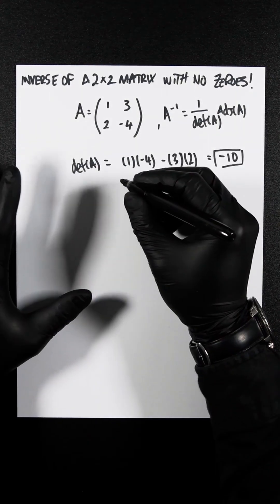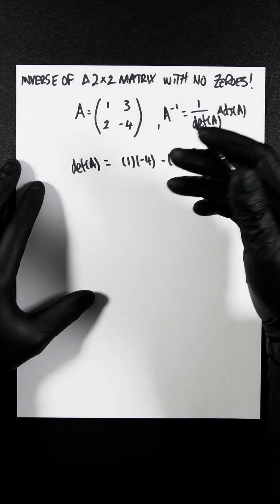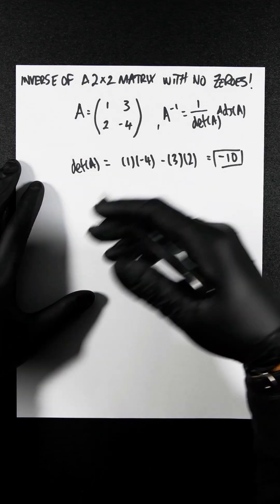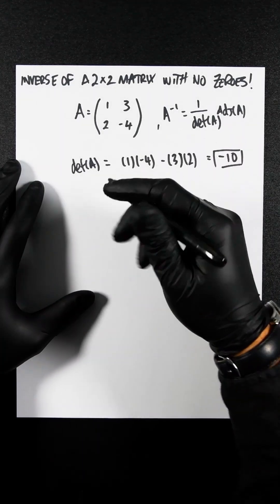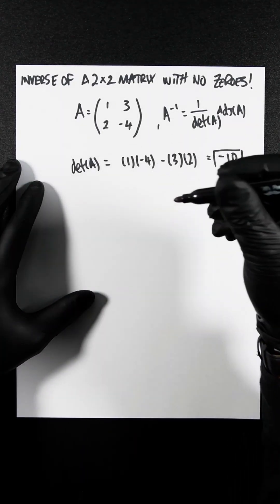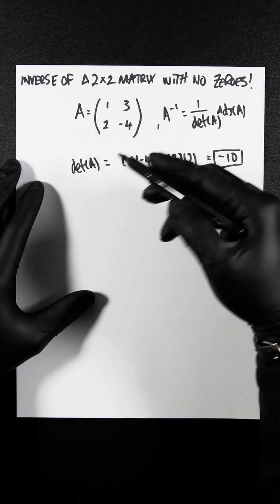Now, this is where it slightly differs. We're not going to be finding the matrix cofactors, or transposing, or swapping rows, or doing row operations. Instead, with the 2 by 2, we swap A and D, and we change the signs of B and C.